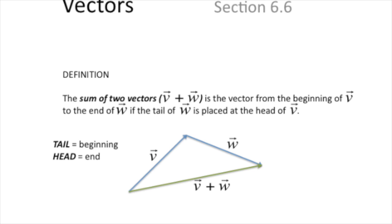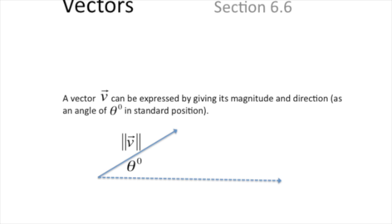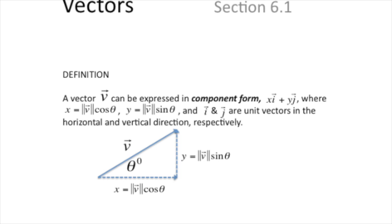The tail is the beginning of the vector, and the head is the end of the vector — the head is where the arrowhead is. A vector can be expressed in two ways: you can give its magnitude and direction, where the direction is given as an angle in standard position, meaning that the vector itself is the terminal side of the angle and the other side of the angle is the x-axis. The other way you can identify a vector is by giving component form, which looks like x-i plus y-j.